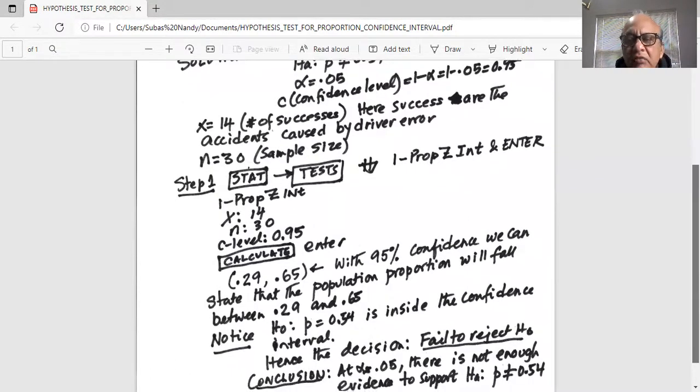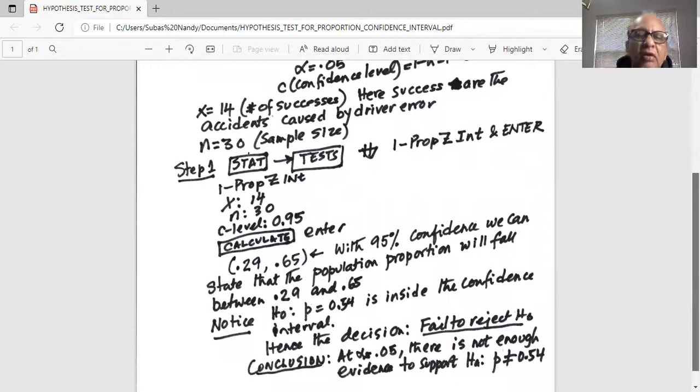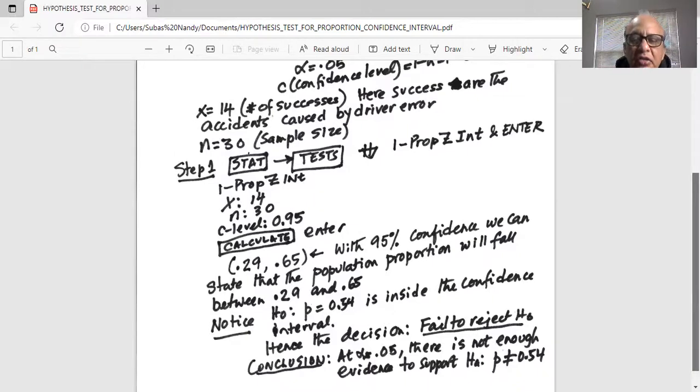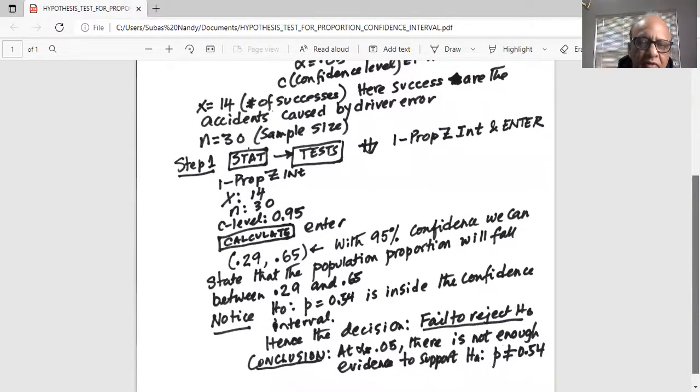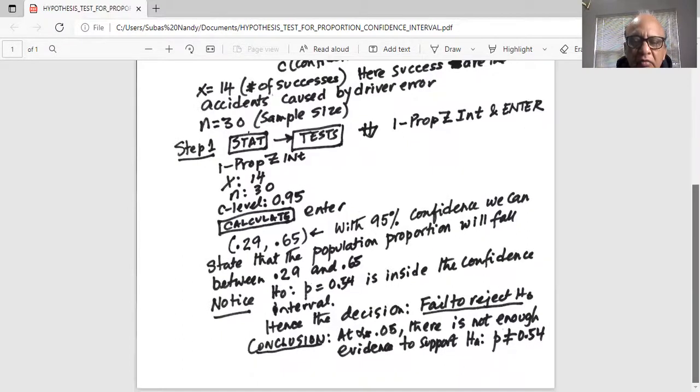Hence, the decision is fail to reject H0 because the hypothesized population proportion of 0.54 is inside the 95% confidence interval.